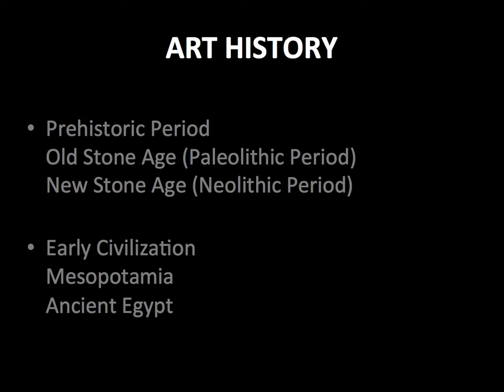Early civilizations basically spread around four primary river valleys. There is the Tigris and Euphrates in the modern-day Iraq area — that's considered the cradle of civilization — and then we have ancient Egypt, centered around the Nile. Those are two of the major four we'll go over here.